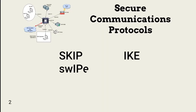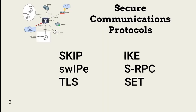We use a set of secure communications protocols to ensure the confidentiality and integrity of data in motion over TCP/IP connections. They include Simple Key Management for IP (SKIP), Internet Key Exchange (IKE), Software IP Encryption (SWIPE), Secure Remote Procedure Calls (SRPC), Transport Layer Security (TLS) — the replacement for SSL — and Secure Electronic Transaction (SET).